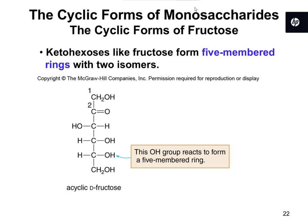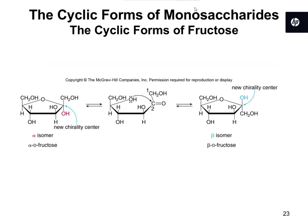The previous examples showed you how to draw aldohexoses. We also have ketohexoses like fructose, which also form cyclic forms. These ones tend to form five-membered rings, so they look a little different. It's the same principle where the OH group attacks the carbonyl carbon, and as a result you end up with a ring of five pieces. You should be able to pick them out — the rings look more like a pentagon with the O up at the top, and you'll see CH2OH on both sides of the ring.